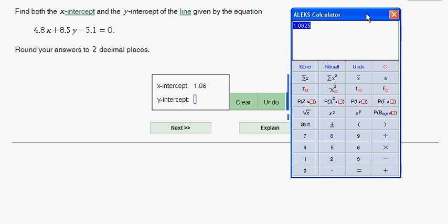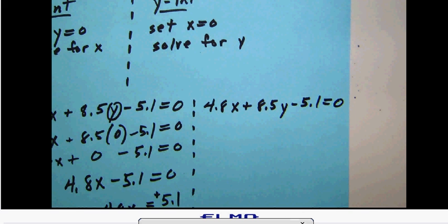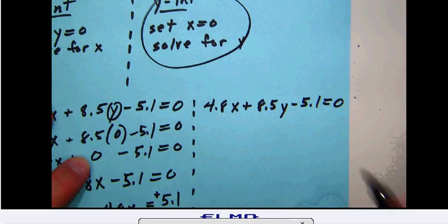Now we're going to need to repeat that very same type of thinking as we do our y-intercept. So let's go back over here and take a look at the very same type of thinking for the y-intercept. Now, as before, if you want to find the y-intercept, we are going to set the x equal to zero and then solve for y.